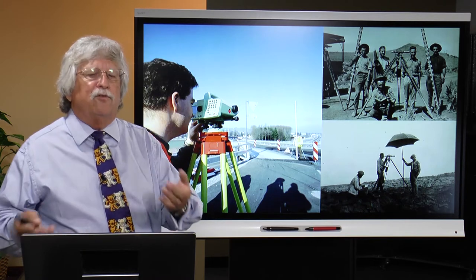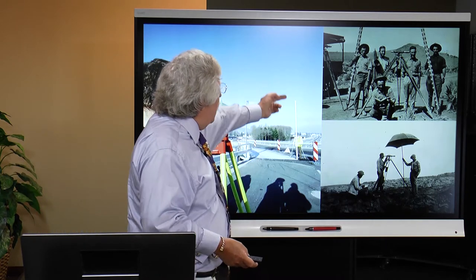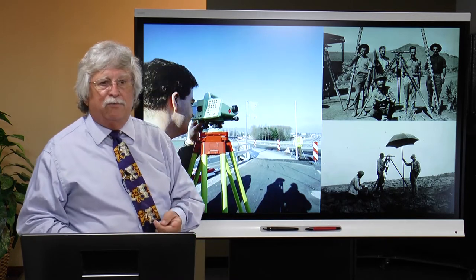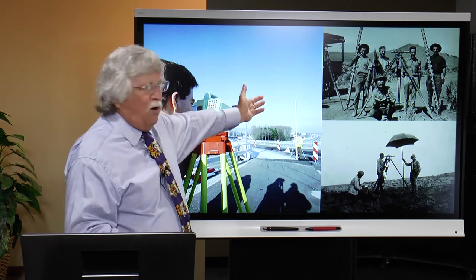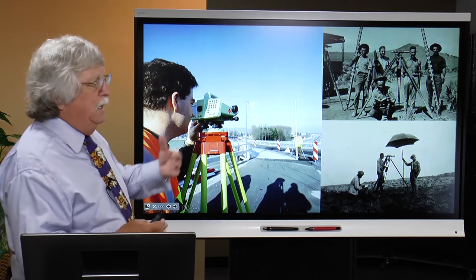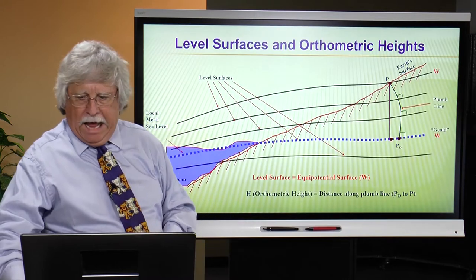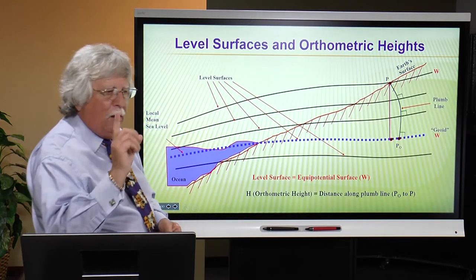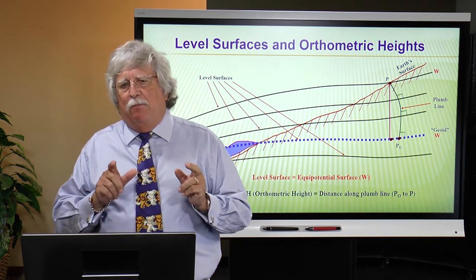For first order or even second order class one leveling, you have to have single-piece rods — a couple-meter single-piece rod that is expensive, must be calibrated, and is hard to move around. You can't just fold it up and put it in the back of the truck. So geodetic leveling is the best way to go about this, but again — very time consuming, very expensive. And no matter how well you do the leveling, you're still constrained by factors that are not terribly well known.